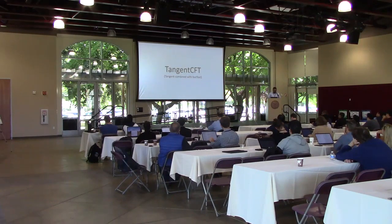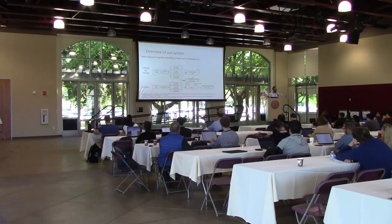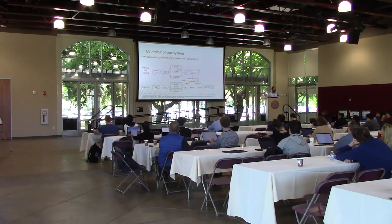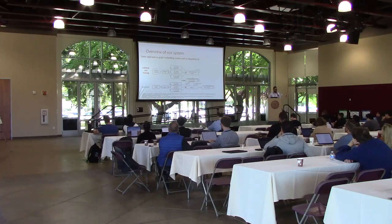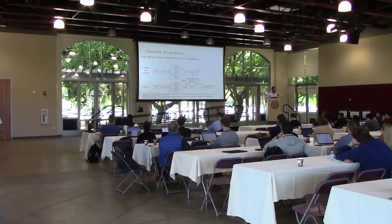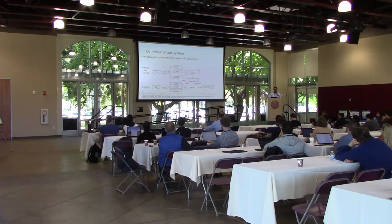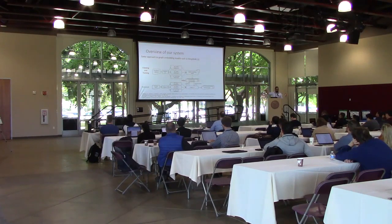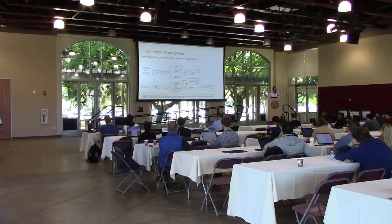Now I want to explain my model, Tangent CFD, which stands for Tangent Combined with FastText. This is the overview of my system — it is quite similar to DeepWalk, a graph embedding model that does random walks on a graph, creates sequences, and applies a sequence embedding model. In my system, I have a collection of formulas. I use Tangent S, which is a good parser for formulas, to create tuple sequences. Then I use an n-gram embedding model because, as mentioned, formulas can be unique, rare, or even unseen — so n-gram embedding models can be a good answer. After training, I have a vector representation for all formulas. When a user inserts a query, I get its vector representation and apply cosine similarity to find similar formulas.